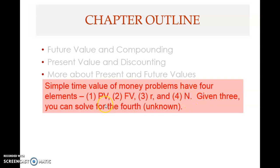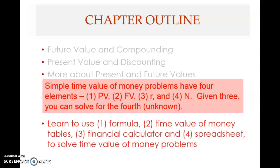There must be equilibrium among these four elements. When you know three of the four elements, you can solve for the unknown fourth element. So in a basic problem, three elements are known and one is unknown, and using the three known elements we solve for the fourth.